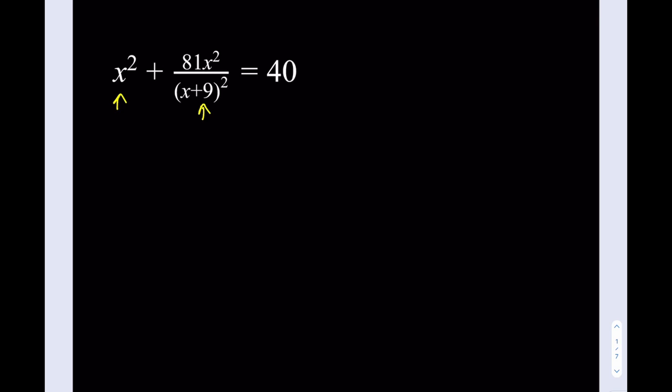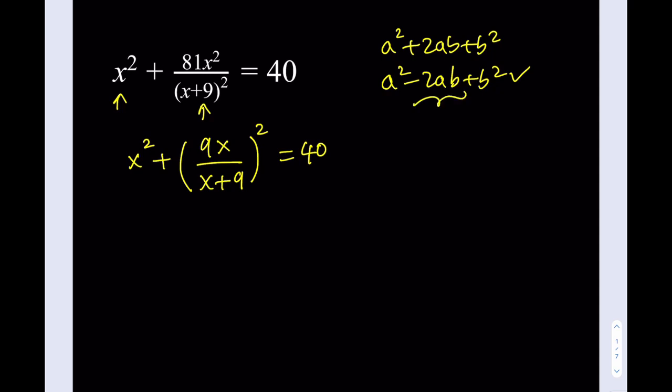So we're going to use a different approach, and my approach involves completing the square. Just notice that the expression that I have here can be written as x squared plus 9x over x plus 9 squared is equal to 40. So what I'm going to do then is I will be subtracting that term that's missing and then adding that.